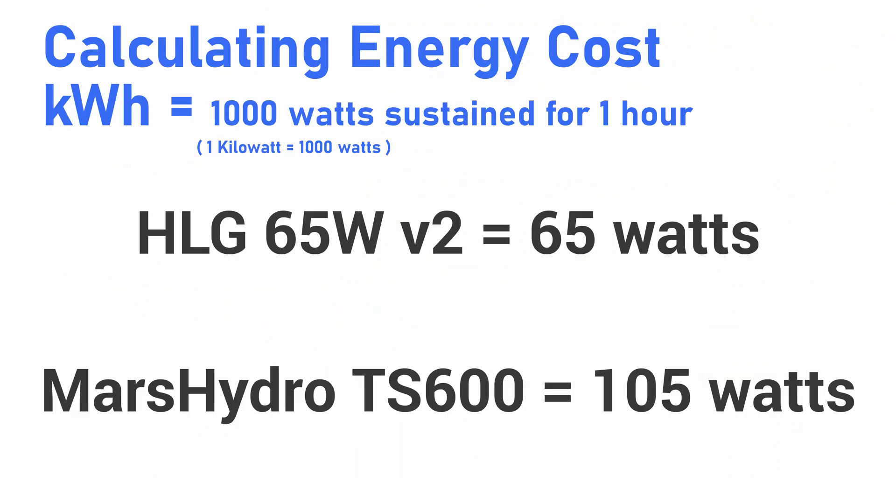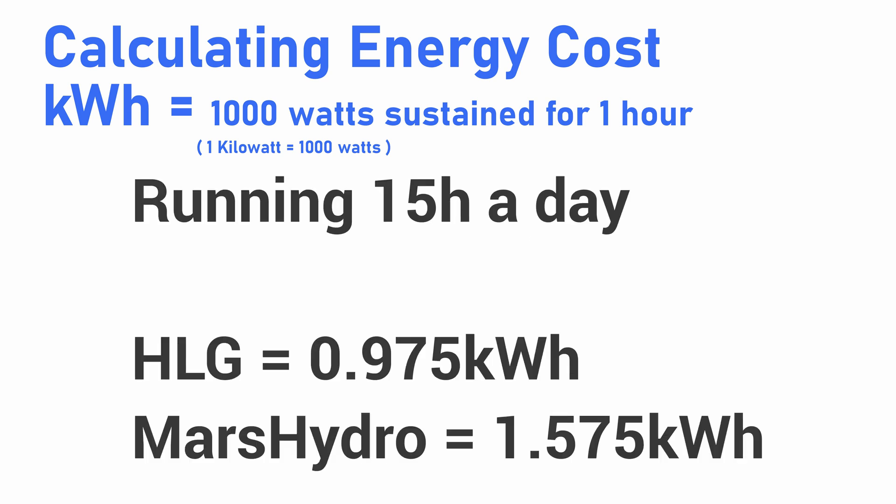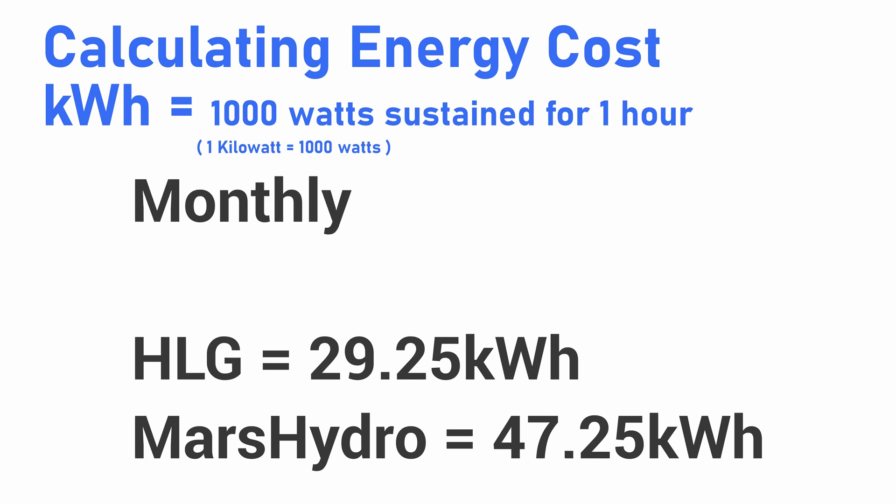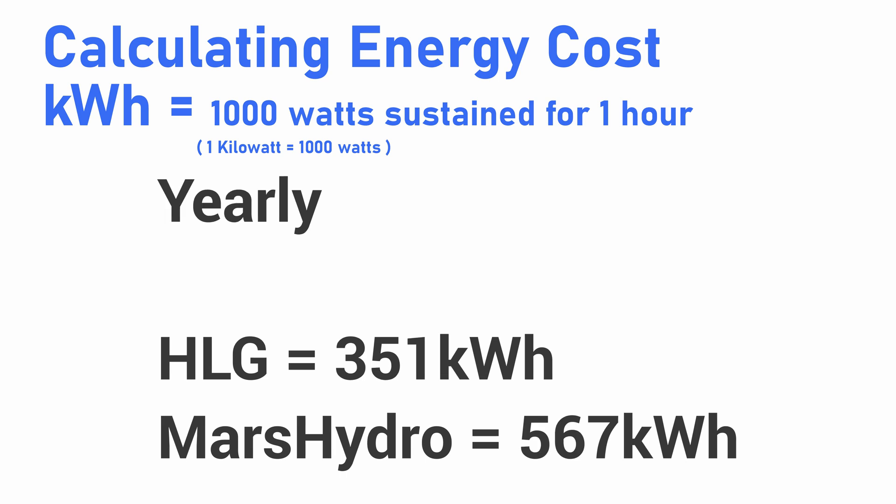To get started we'll look at the base wattages: the HLG is 65 watts but the Mars Hydro is about 105 watts, as shown in my previous video. In this scenario we're going to run the lights for 15 hours a day. If we multiply wattage times hours we get our total kilowatt hours. The HLG panel comes in at just under one kilowatt hour while the Mars Hydro is 1.5 kilowatt hours. Expanding that further, the HLG board is 29.25 kilowatt hours per month and 351 kilowatt hours yearly, while the Mars Hydro is 47.25 monthly and 567 kilowatt hours yearly.